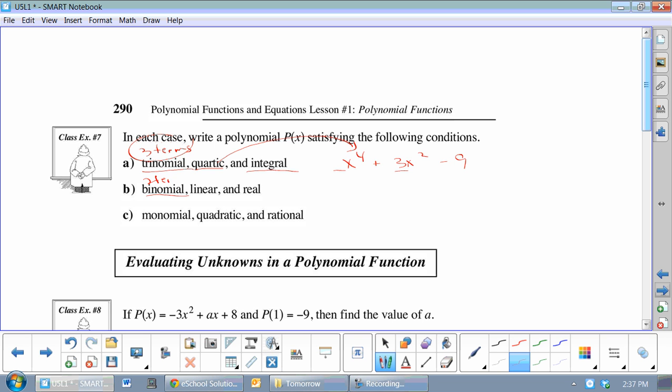Binomials, two terms. Linear, degree 1, and real. So, root 3x plus 7. I guess these are all p of x equals. And then, we have binomial and quartic, and it's rational. So, p of x would equal. So, I'm only allowed one term. It's got to be rational. So, 1 half x, and it's got to be quadratic. I think I said quartic, but no, it should be quadratic. So, that's degree 2.